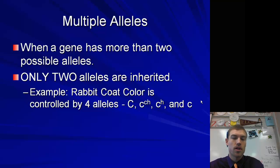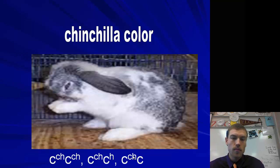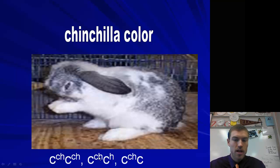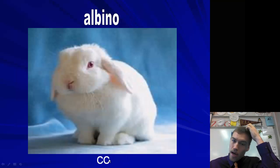An example would be rabbit coat color, which has four different alleles: big C, little c-h, little c, and little c. The wild type color has the dominant big C — anytime you've got big C, whichever one it's paired with, that one is always going to be dominant over all others. We can also have a chinchilla color, which is little c-h, and that is dominant to little c but also to h, which is the Himalayan color. In order to be Himalayan, you either have to be little c-h, little c, or little c-h, little c-h. And then you've got albino, which is little c, little c.